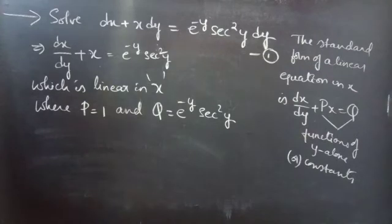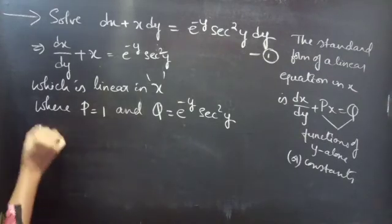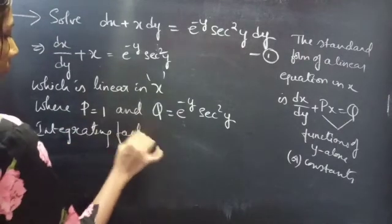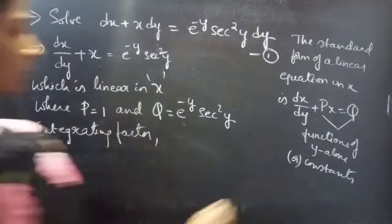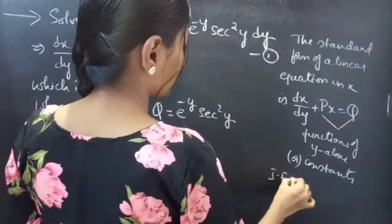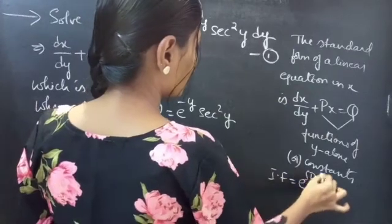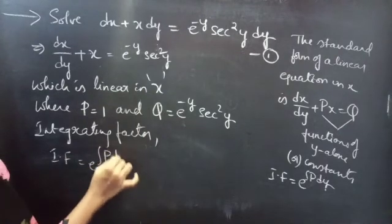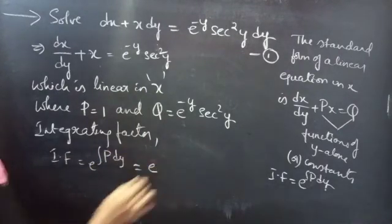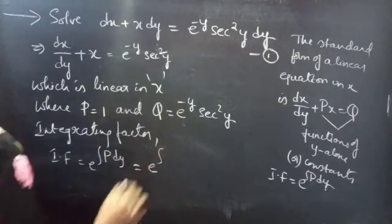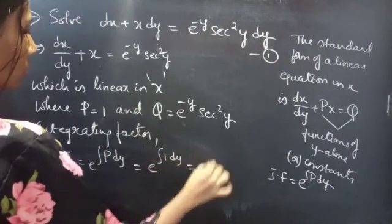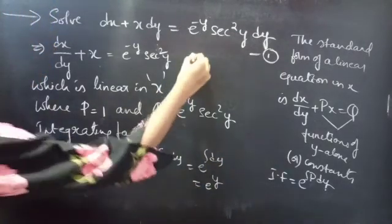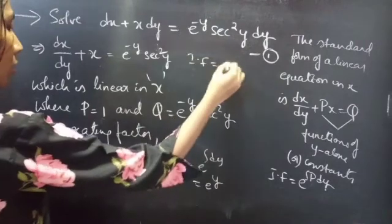Now we need to find the integrating factor for the given problem. We know that the integrating factor of a linear equation in x is given by e power integral p dy. So for p equals to 1, we will get e power integral 1 into dy, which equals to e power integral dy equals to e power y. So our integrating factor is e power y.